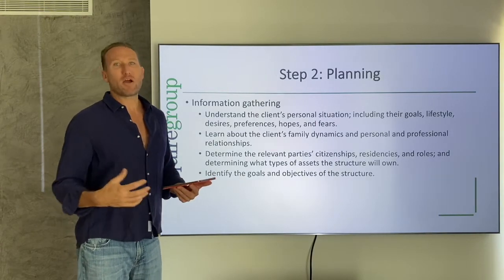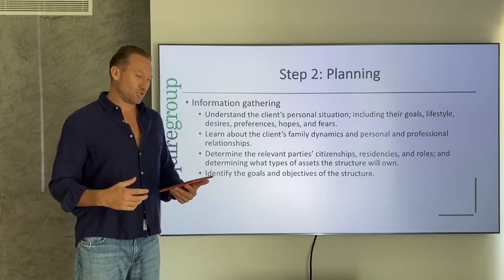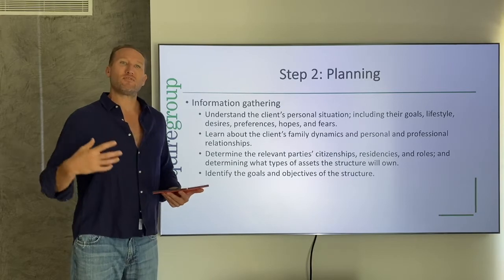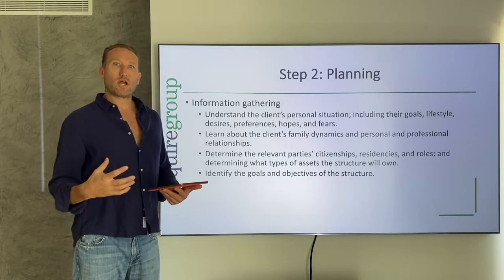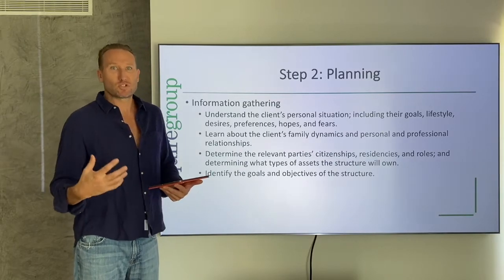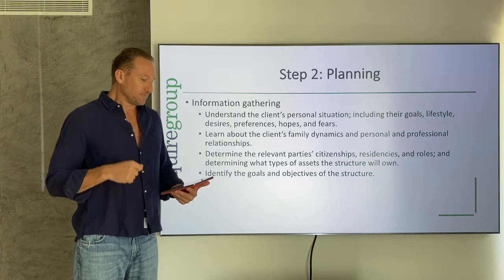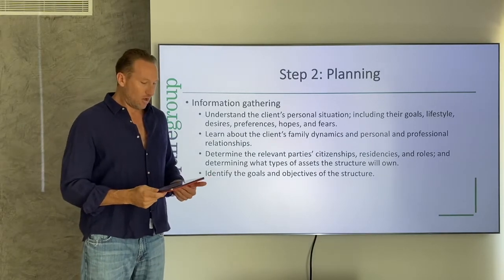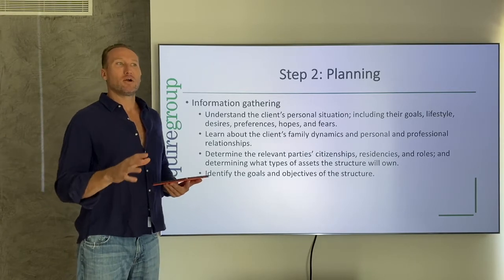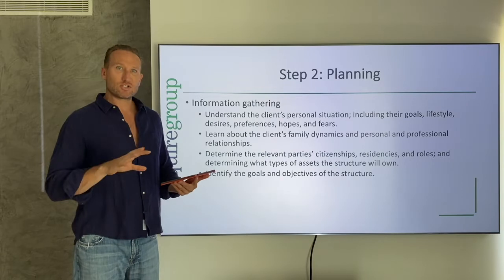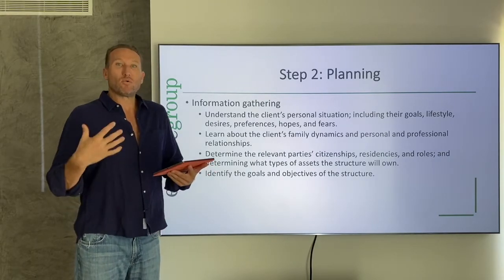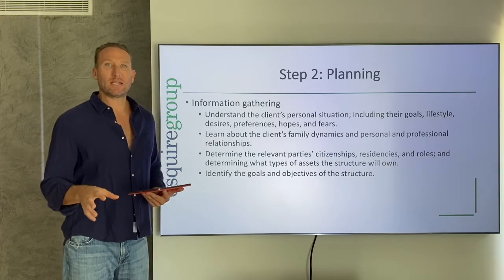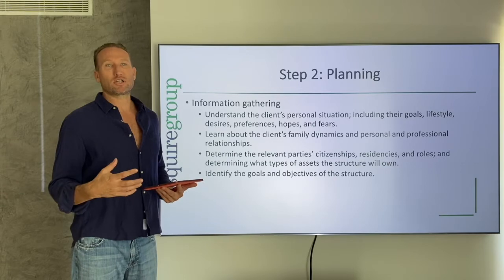That goes beyond just knowing what they own and who their family members are. I want to understand the client's personal situation — their goals, their lifestyle, their desires, their preferences, their hopes, their fears — because all of this plays into the wealth structure and how it needs to operate and where it needs to be located. We also need to learn about the client's family dynamics and the personal and professional relationships that are going to have an impact on the structure. Then we look at who the management is going to be, the guardian, the beneficiaries, their citizenships, their residencies, what roles they'll have, and what types of assets the structure is going to own and where those assets are located.